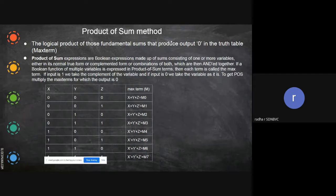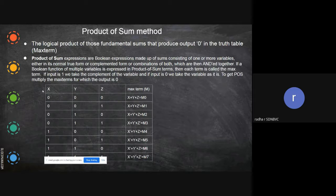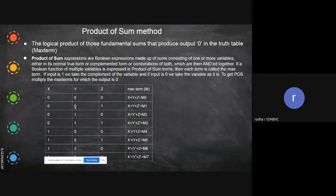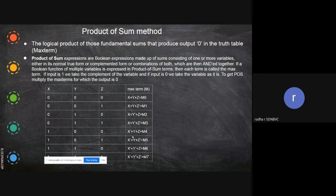The next one is Product of Sums — it's the reverse. In Sum of Products you look for ones in the output, and for respective combinations: if the value is zero you take it as x-bar, if one you take it as y-bar and so on. Whereas here, it's the reverse — if it is zero you take it as x, and if it is one you take its complement, like z-bar. You have to find zeros, not ones — that is the main difference — and write it as Product of Sums.